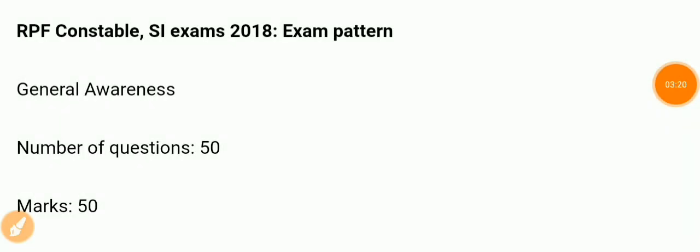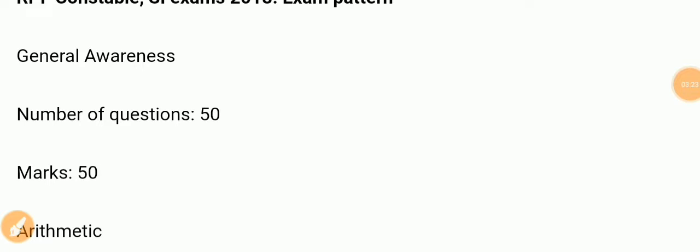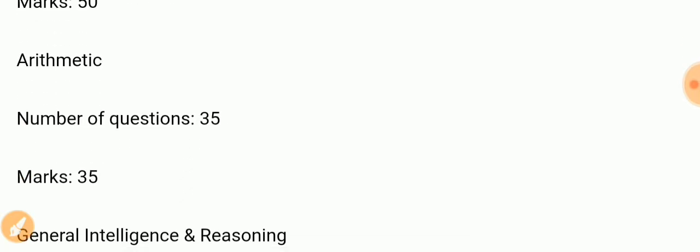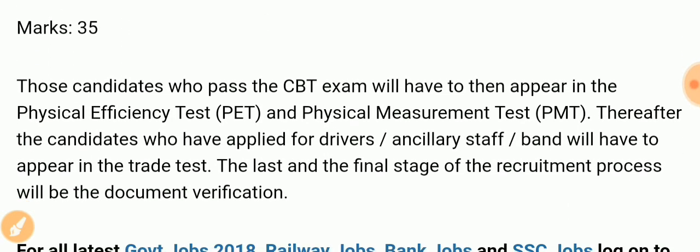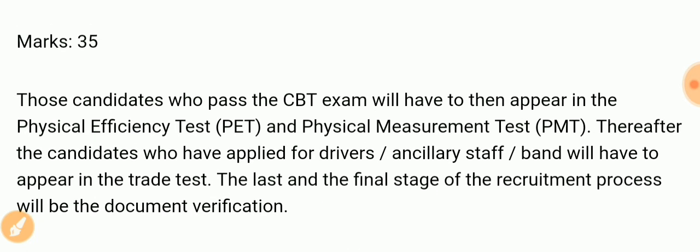RPF Constable and SI exam pattern for 2018: General Awareness has 50 questions for 50 marks, Arithmetic has 35 questions for 35 marks, each question is for one mark. Candidates who pass the CBT exam will then appear in the Physical Efficiency Test. The final stage of the recruitment process will be document verification.